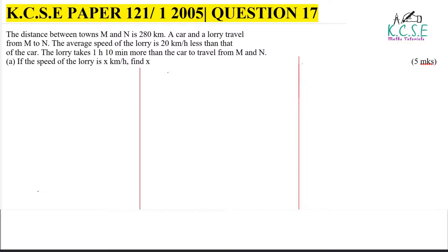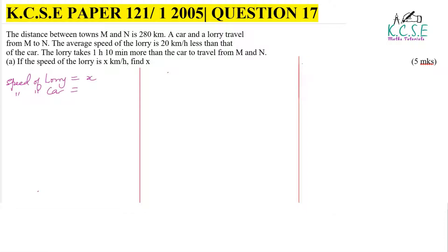Let's begin with part one. The first thing we're going to do is write down the expressions of the speeds of the car and the lorry. The speed of the lorry is given as X kilometers per hour. The average speed of the lorry is 20 kilometers per hour less than that of the car, therefore the speed of the car will be X plus 20. That is step number one.